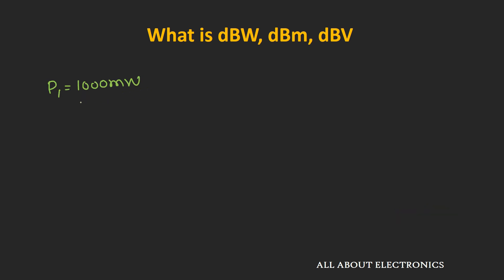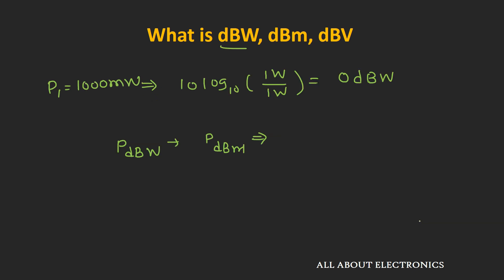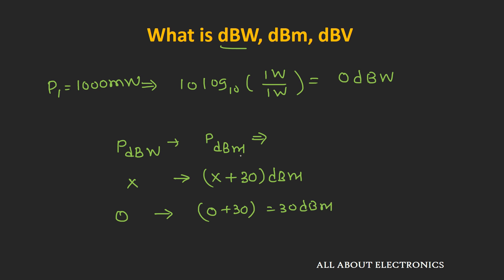At the same time, if we represent 1 W in dBw form, it is 10 log(1 W / 1 W) = 0 dBw. So the same power of 1 W equals 30 dBm but 0 dBw. Therefore, to convert from dBw to dBm, simply add 30. Conversely, to convert from dBm to dBw, subtract 30.